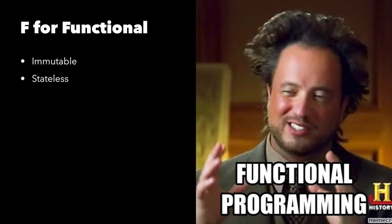All you need to know is that functional programs have functions as the major building block, and they're immutable - you don't modify state, you just create new state if you need to. They're stateless in that functions don't know anything about the past. If a function takes an input and produces an output, it's always going to give the same output for a given input. This makes reasoning about your programs better, and it makes testing great because you don't have global state that could change underneath you, causing race conditions.